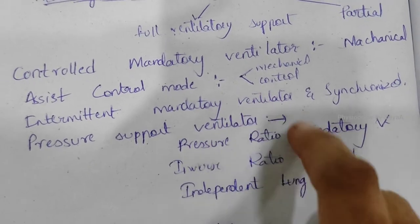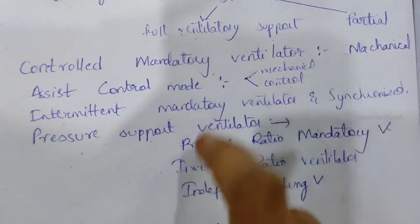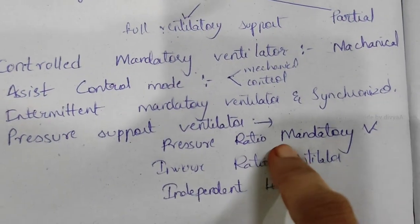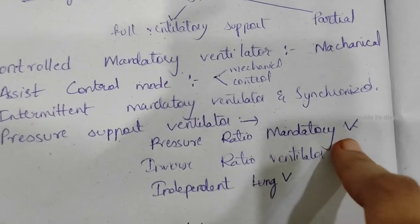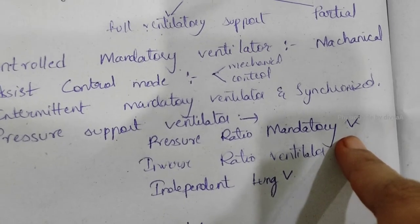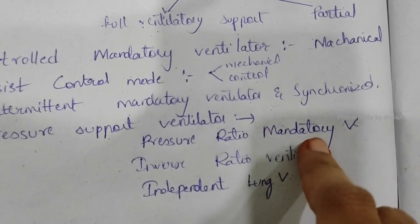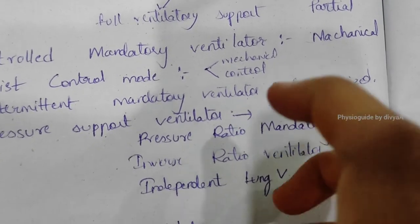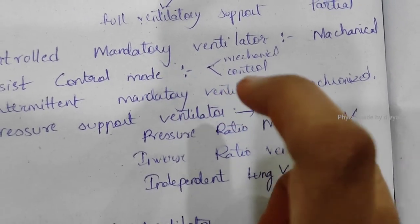Pressure support ventilation: an upper set inspiratory pressure is added to the ventilator circuit during inspiration in spontaneously breathing patients. Pressure ratio mandatory ventilation: a set pressure is delivered with inspiration into the machine.